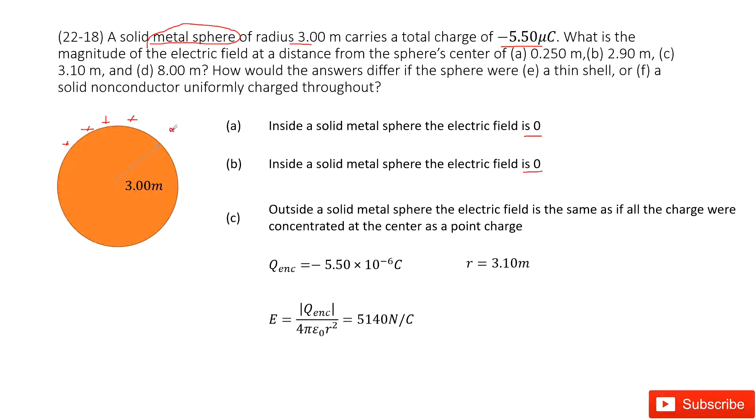So now we can consider Gauss's law. We found the electric field is net charge enclosed divided by 4πε₀r². r is given, and the net charge enclosed is also given. Input given quantities to get the answer.